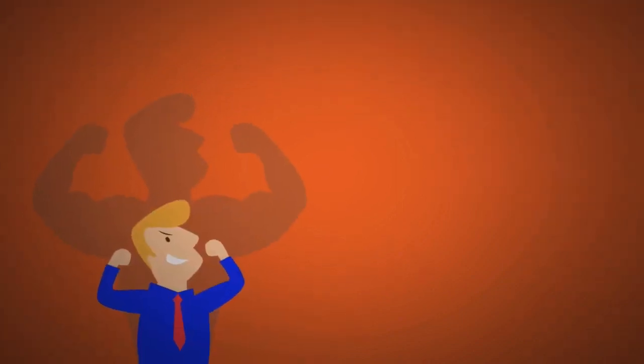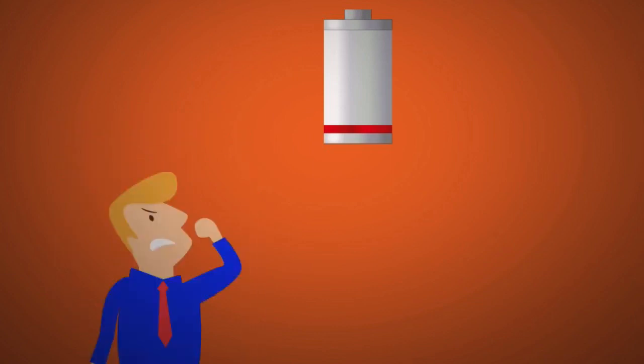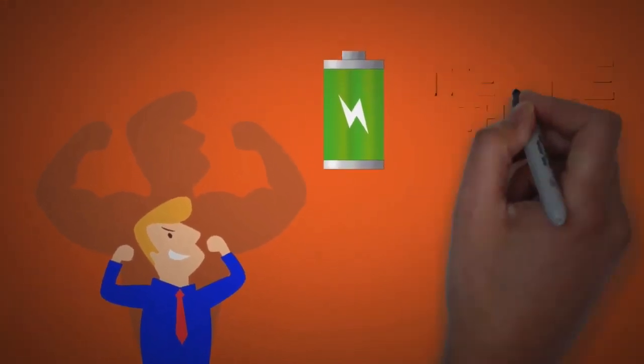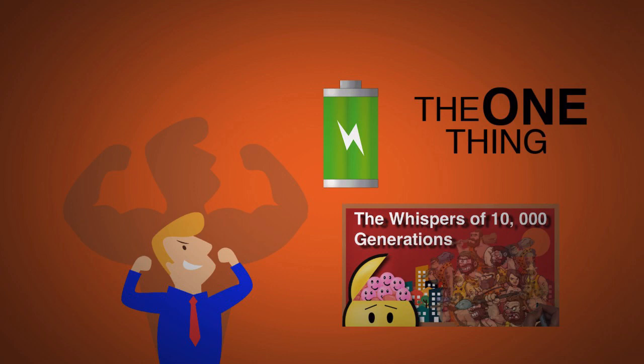Next, willpower is not on-call. It's like a battery that can run out, and once it runs out, you will revert back to your default behavior. So Gary says to use our willpower first on what matters most, which is our one thing. I talk more about why our willpower is not reliable on one of my videos.